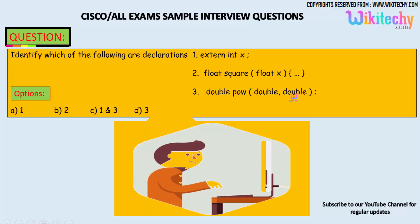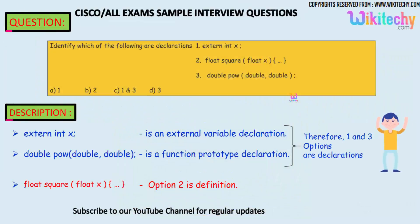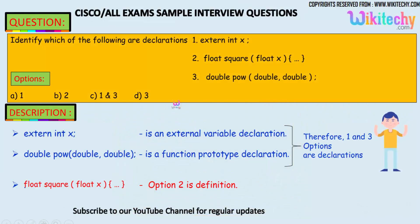Let's see what could be the answer. Yes, obviously that's my answer. So extern int x is an external variable declaration, the first one. Double power double comma double is a function prototype declaration, whereas the float square of float x got the definition. The answer is one and three, that's the answer.